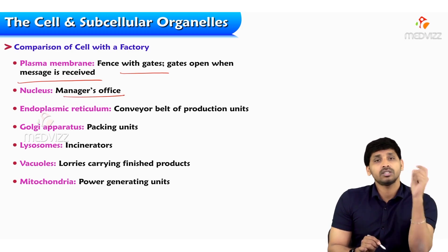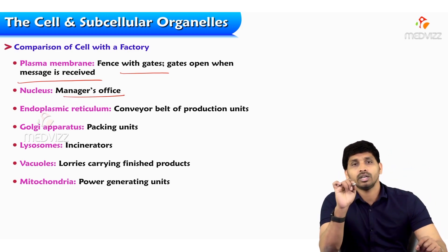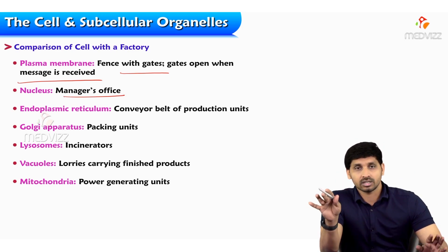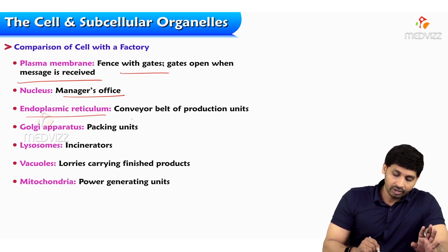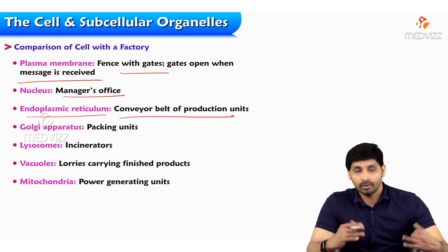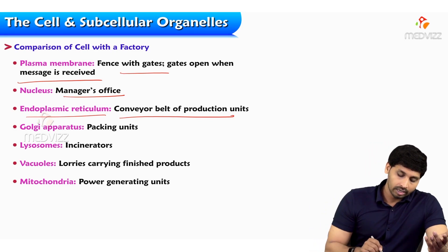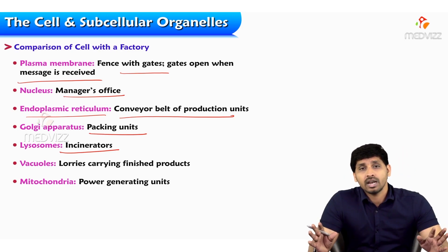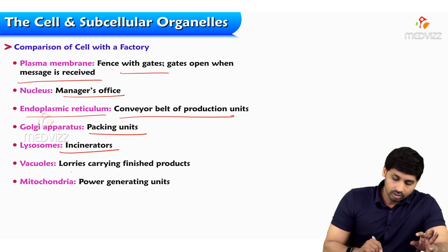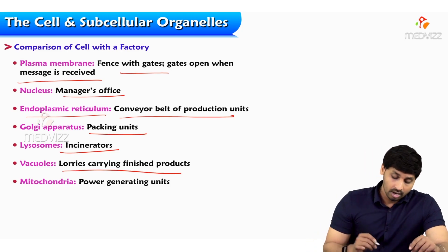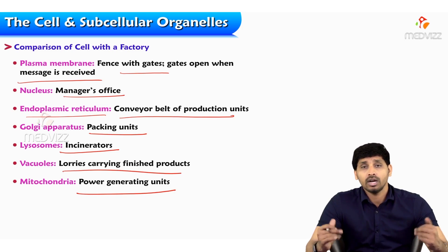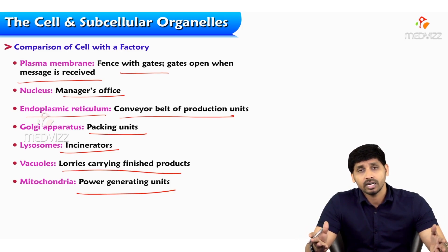The nucleus is like a manager's office — based on cellular need, it takes the order and determines how much has to be processed. The endoplasmic reticulum is like a conveyor belt of production units. The Golgi apparatus is like a packing unit. The lysosome is like an incinerator or quality check — if anything fails quality, it gets removed. Vacuoles are like lorries carrying finished products, and mitochondria are like a boiler generating power to run the machinery.